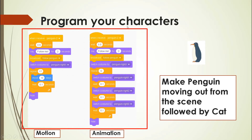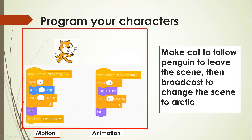When the penguin receives 'penguin two', meaning the cat has finished speaking, the penguin will say 'Follow me!' and broadcast 'follow penguin'. This asks the cat to follow the penguin moving from the center to the right, exiting the desert scene. The penguin switches to right-facing costumes for this animation and motion, then hides itself when it reaches the edge.